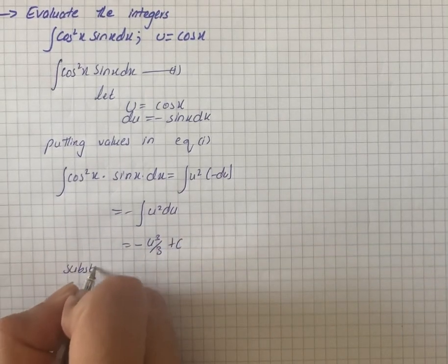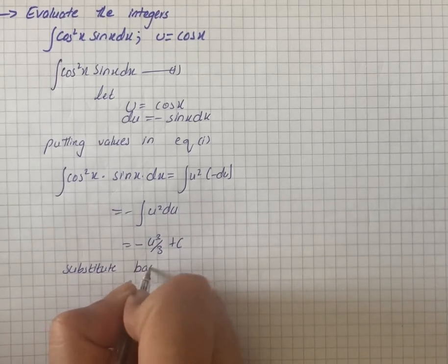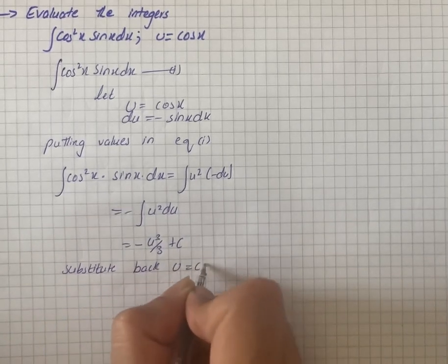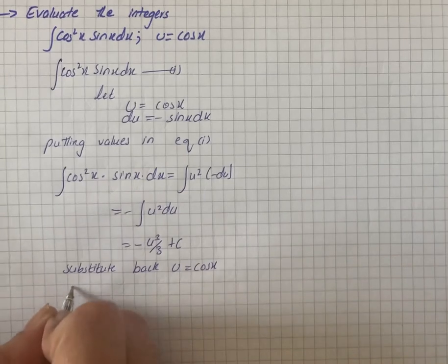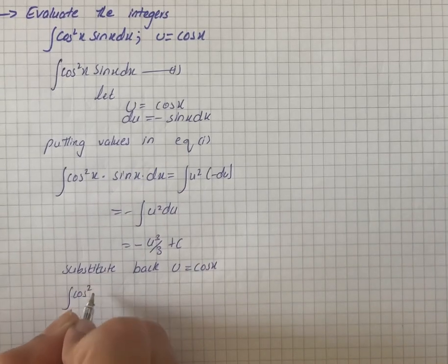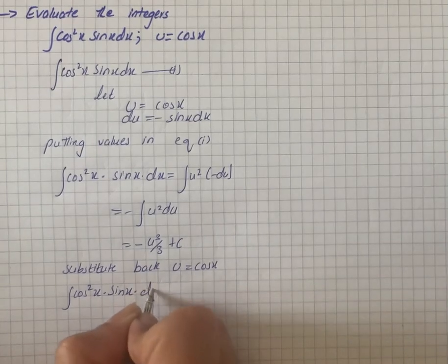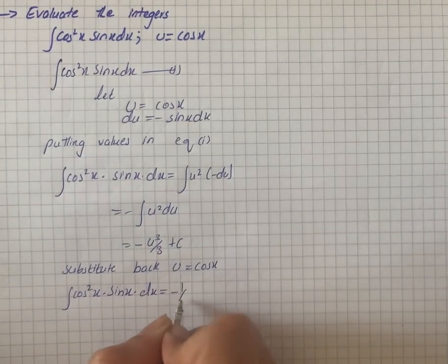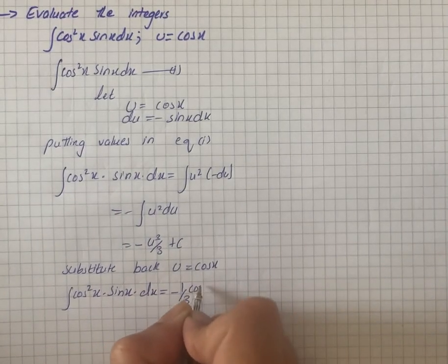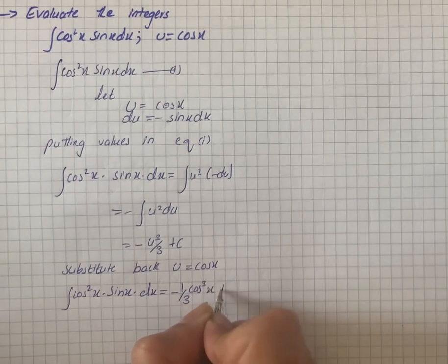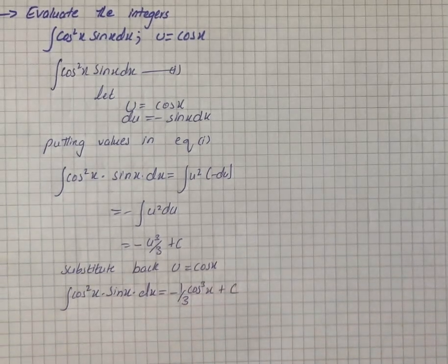Now we substitute back u equals cos(x). So we have cos²(x)·sin(x)dx that is equal to -1/3·cos³(x) + C. That is our solution for the given integral.